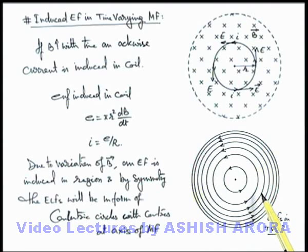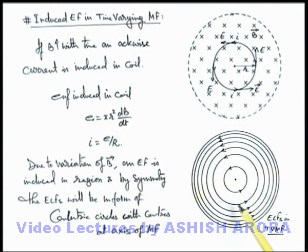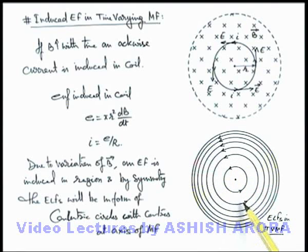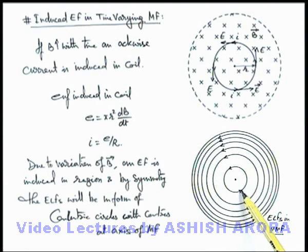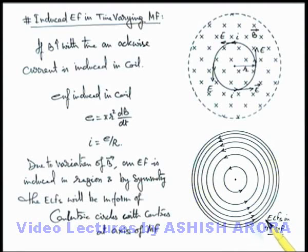The electric lines of force are closed loop lines because these are due to an induced electric field and not because of any source charge as studied in electrostatics. These closed loop lines correspond to a non-conservative electric field, since if a charge is circulated along the line, the total work done will not be zero — it will be qE × 2πr. So this is a non-conservative electric field, not the field produced by static charges. The important point is to understand the configuration of electric lines of force induced due to variation in magnetic field in a cylindrical region.